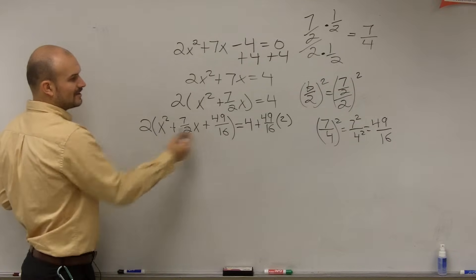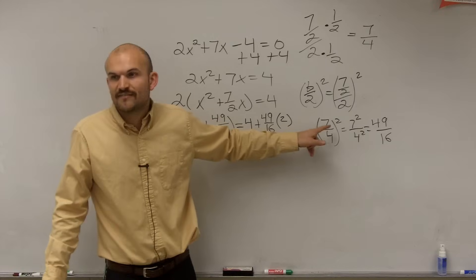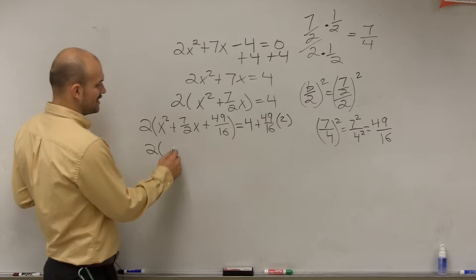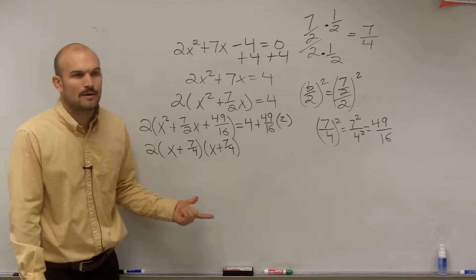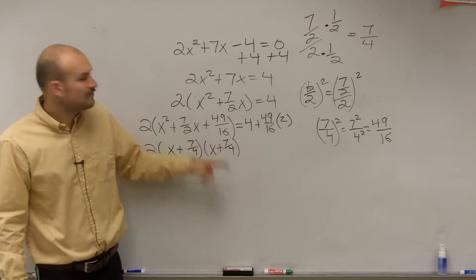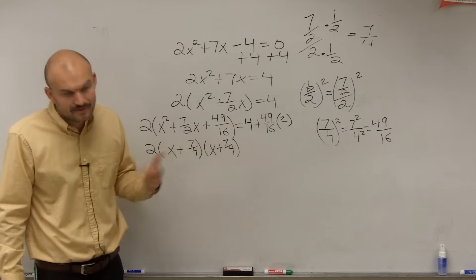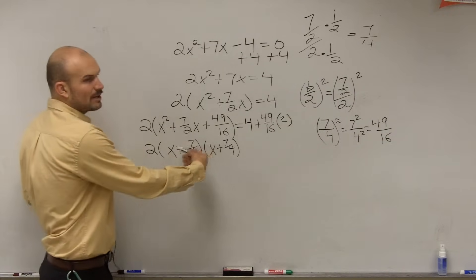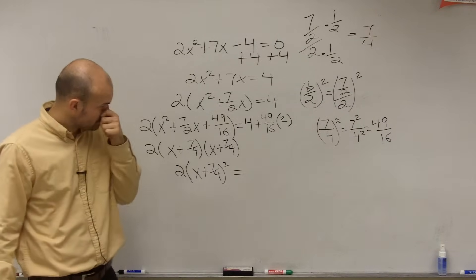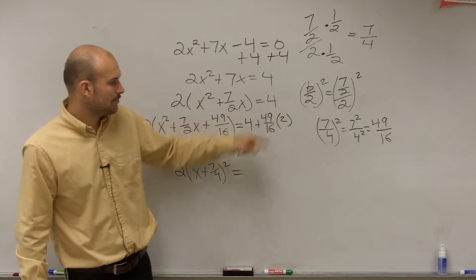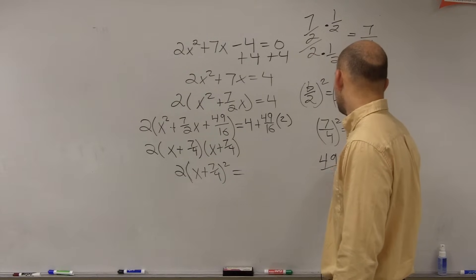Now I can rewrite this as a perfect square. The trick is to take b divided by 2 — that's 7-fourths — and that gives you x plus 7-fourths, all squared. You can verify: x times x is x squared, 7-fourths times 7-fourths is 49-sixteenths, and 7-fourths x plus 7-fourths x gives 7-halves x. So I write x plus 7-fourths squared equals, and now let's simplify the right side: 4 plus 49-sixteenths times 2.